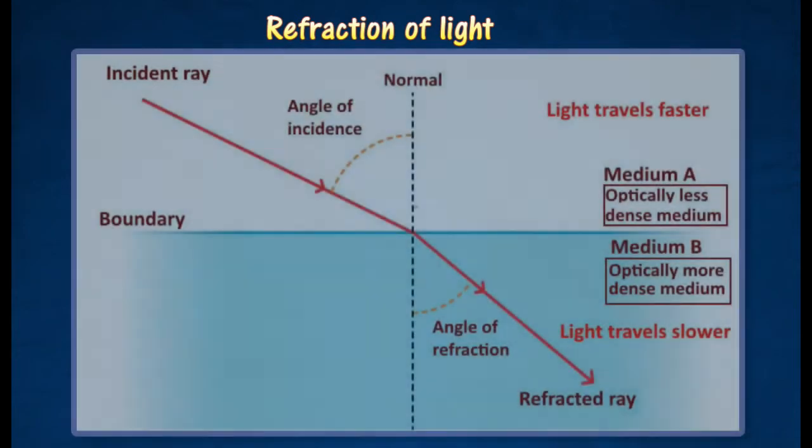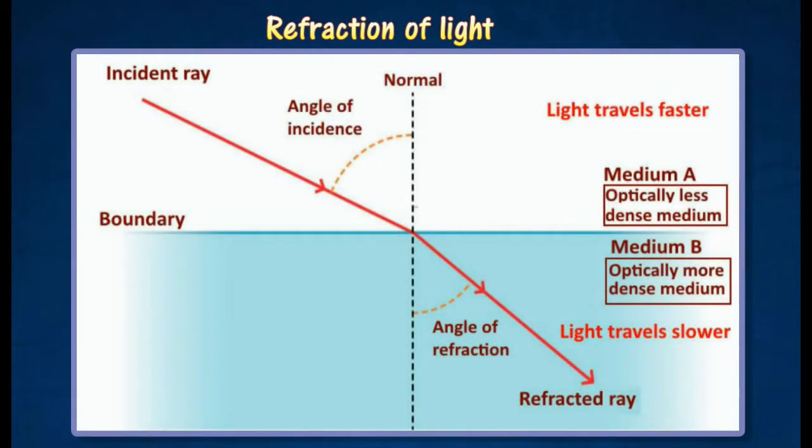Refraction of light occurs as a result of a change in the velocity of light as it passes from one medium into another. Light travels at different velocities in the two mediums. If medium B is optically denser than medium A, then light travels at slower velocity in medium B as compared to medium A.